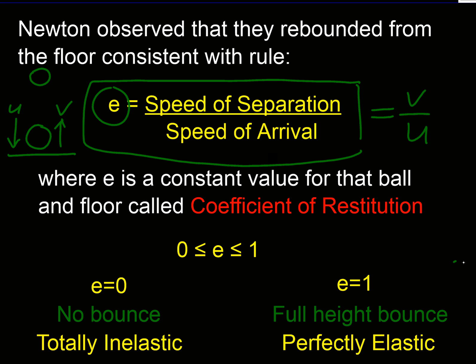And he called this ratio the coefficient of restitution. And he also realized that there were bounds to this figure. So let's have a think about what those bounds are.